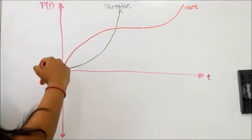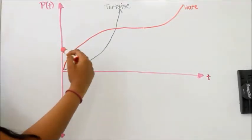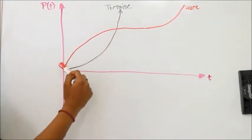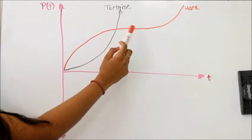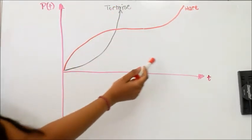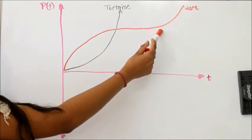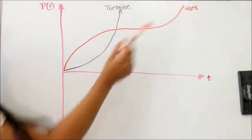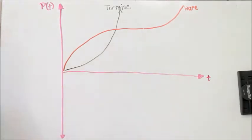The velocity of the hare is decreasing slowly. And when the hare falls asleep, the tortoise's velocity, which is increasing constantly, is able to surpass the position of the hare. When the hare wakes up and tries to catch up, the tortoise is too far ahead in the race for the hare to catch up, and thus the tortoise wins.